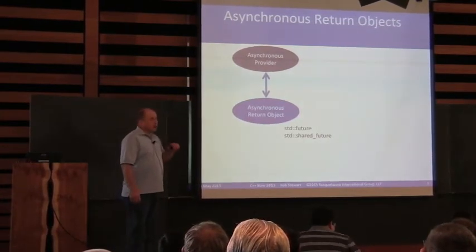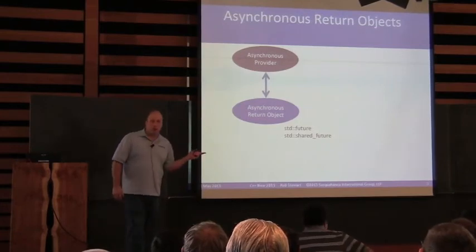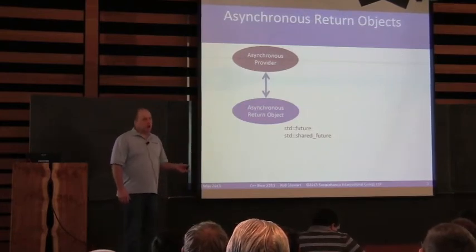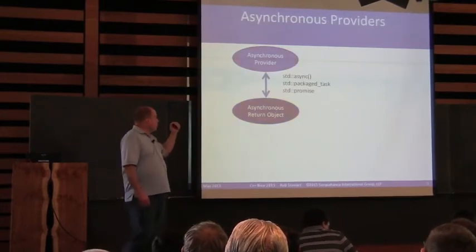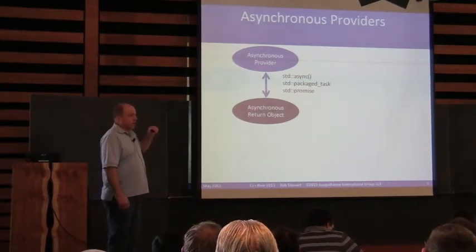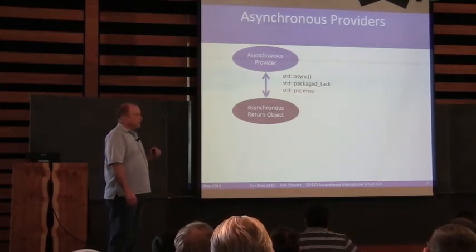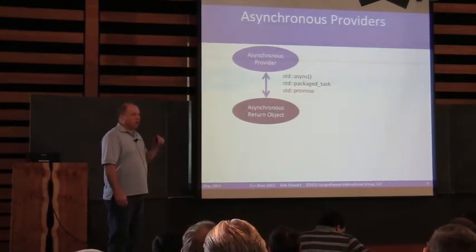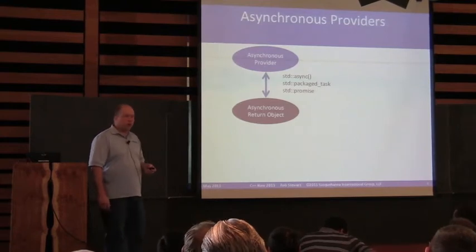We'll talk about std::future and std::shared_future as examples of the asynchronous return objects. We'll talk about std::async — a function template — std::packaged_task, and std::promise as our examples of asynchronous providers.